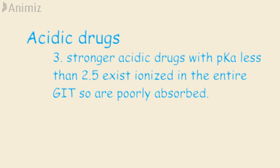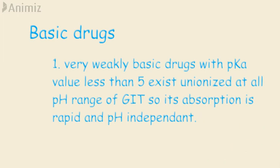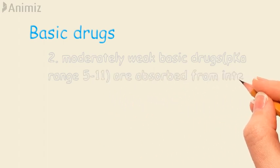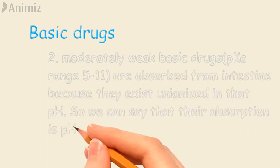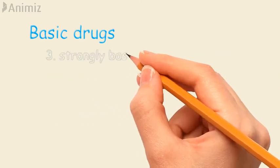For basic drugs, the generalizations are: first, very weak basic drugs with pKa less than 5 also exist in unionized form at all pH values of the GIT, and their absorption is rapid and pH independent. Second, moderately weak basic drugs with pKa range 5 to 11 show pH-dependent absorption; they are better absorbed from the intestine where the pH is relatively alkaline, because at alkaline conditions they largely exist in unionized form.